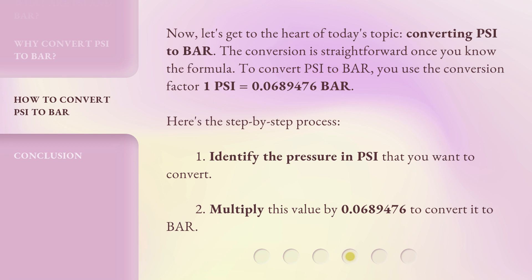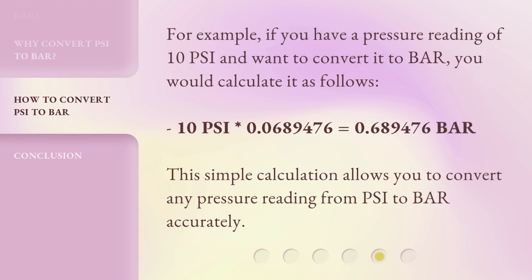Here's the step-by-step process. Step 1: identify the pressure in PSI that you want to convert. Step 2: multiply this value by 0.0689476 to convert it to bar. For example, if you have a pressure reading of 10 PSI and want to convert it to bar, you would calculate: 10 PSI × 0.0689476 = 0.689476 bar. This simple calculation allows you to convert any pressure reading from PSI to bar accurately.